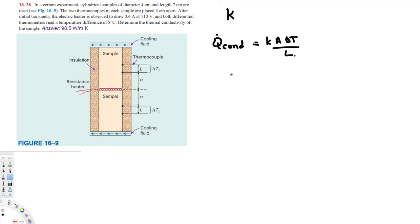Let's rearrange this one and see what we have. So K is going to be equal to Q̇ conduction times L over AΔT, right? And let's put all the given information. We don't have the heat transfer provided.